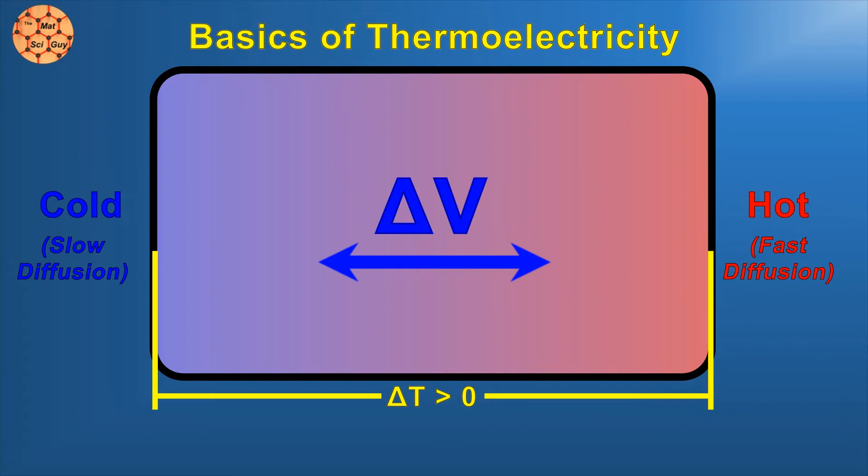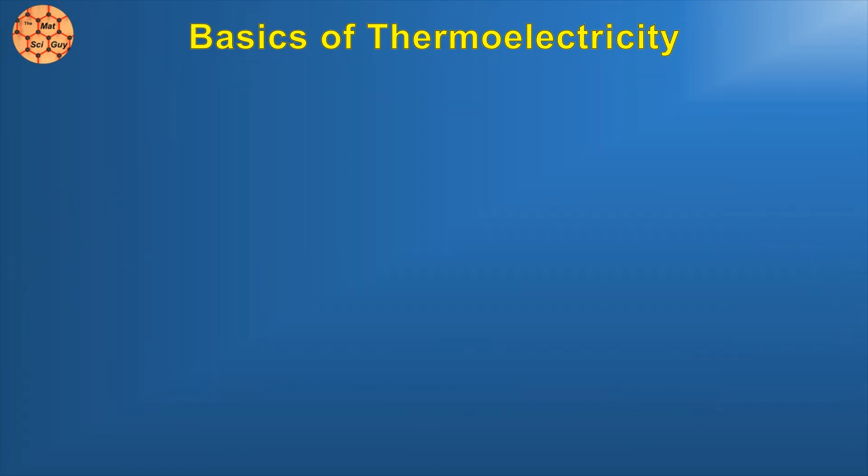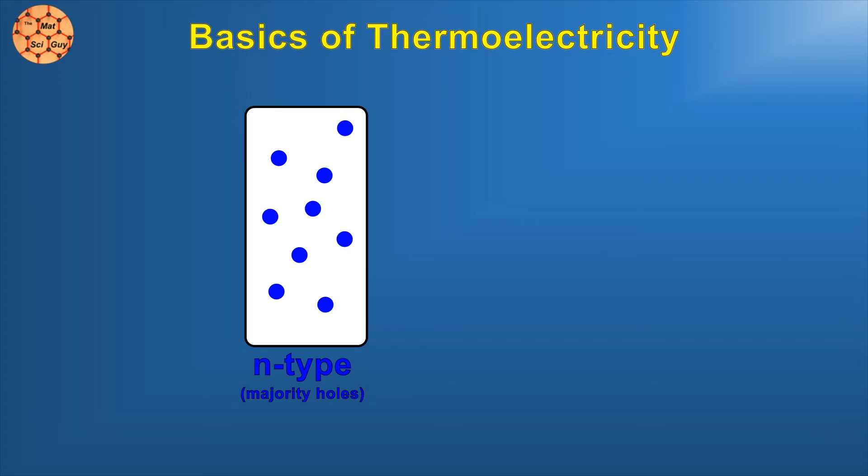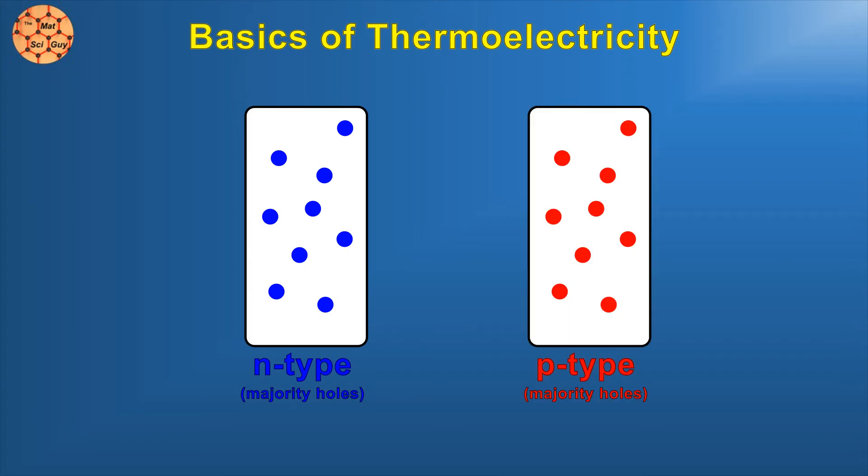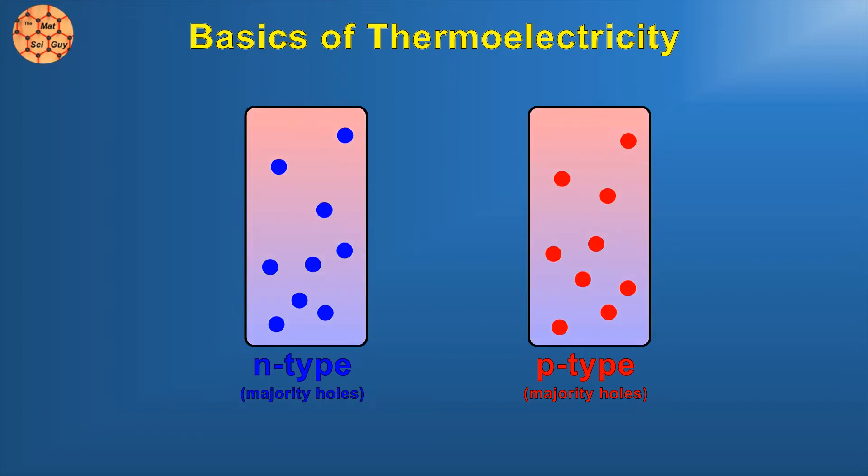We used electrons in this example, but the same effect can happen with holes. Positively charged spaces where electrons are missing that basically act as their own charge carriers. A semiconductor with an abundance of electrons is called n-type, while a semiconductor with an abundance of holes is called p-type. The basic principle of operation in a thermoelectric generator is to have both an n-type and a p-type material experiencing this temperature gradient. The voltages they produce due to the Seebeck effect will be of the opposite sign, and if we connect the cold ends, we have usable electric power.